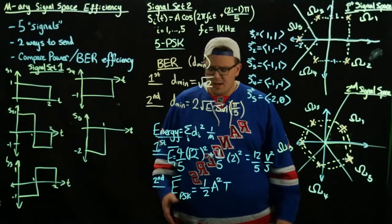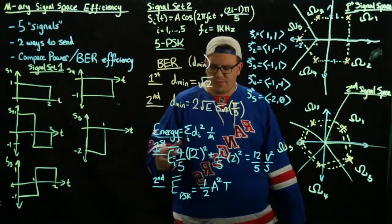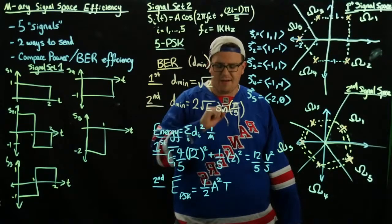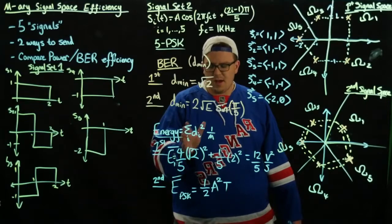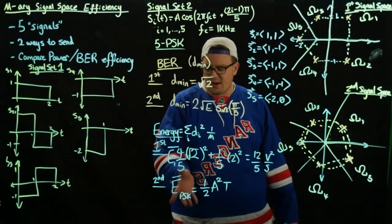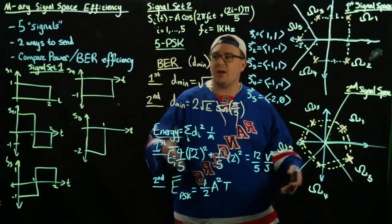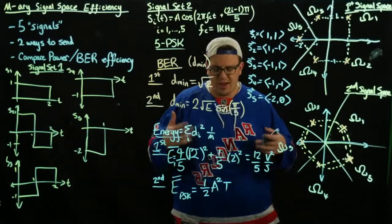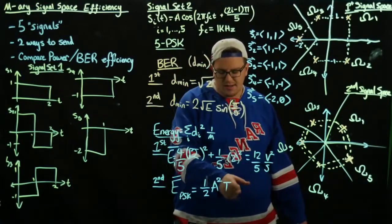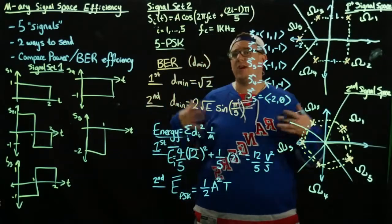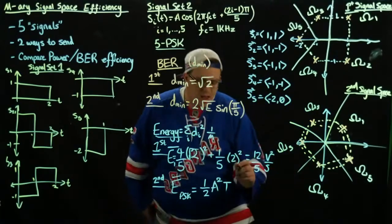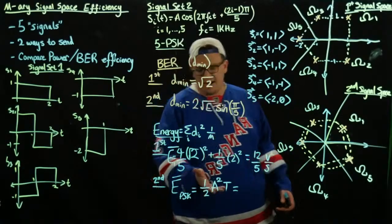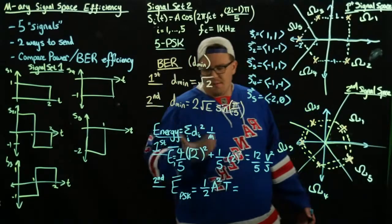The average energy for the first system was found by summing the squared distances and dividing by the number of signals. The energy for PSK is found by exploiting the fact that the power in a sinusoid is one half A squared, multiplied by T. We wouldn't need to know what A squared is right now, since we can find it later after we equalize the bit error rate performance.